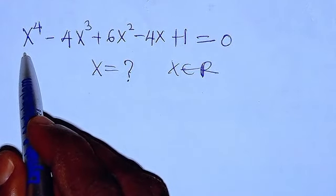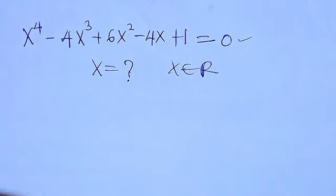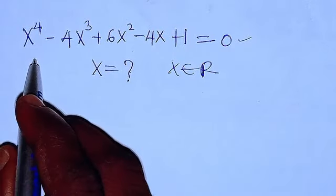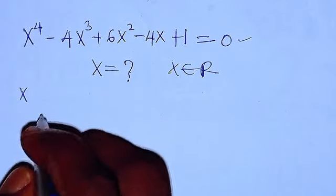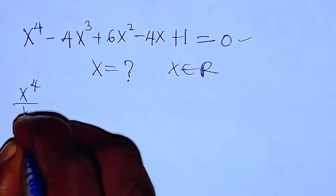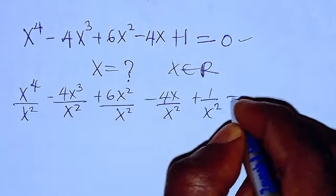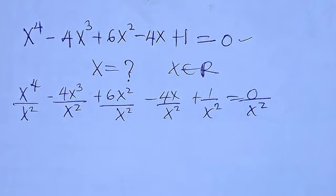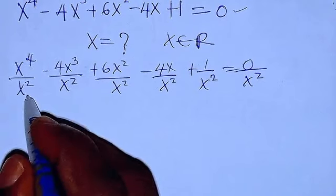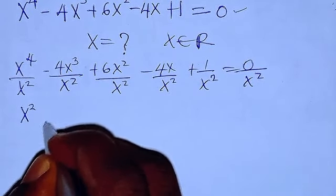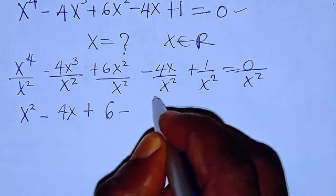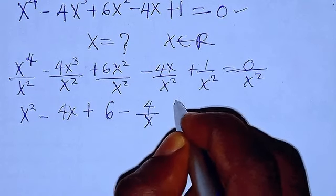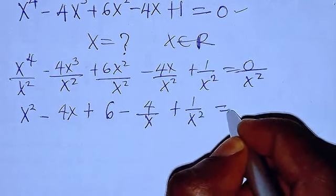What I'm going to do is reduce this equation. I'm going to divide through by x squared, giving us x raised to power 4 divided by x raised to power 2. So x raised to power 4 divided by x squared gives us x squared minus 4x plus 6 minus 4 over x plus 1 over x squared, equals 0.